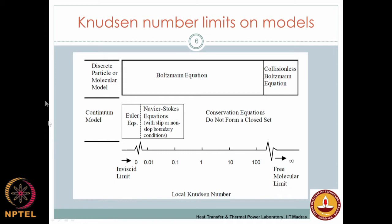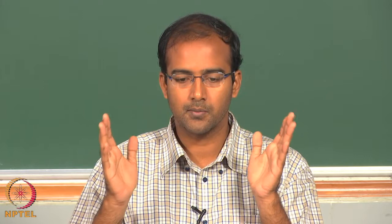All continuum models are valid approaching a Knudsen number close to 0 — where the mean free path is much smaller than device dimensions, giving Knudsen numbers of the order of 0.0001. As the Knudsen number increases — either by increasing mean free path or decreasing length scales — you slowly start deviating from the continuum assumption. Gases have a larger mean free path than liquids, so these phenomena are more likely to appear in gases first.